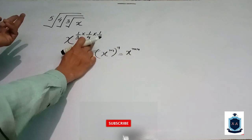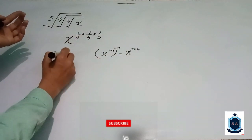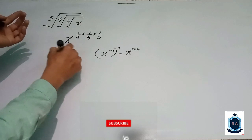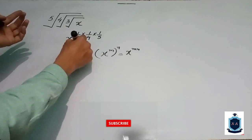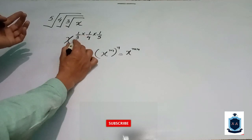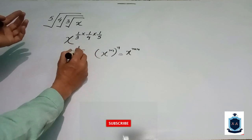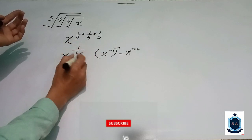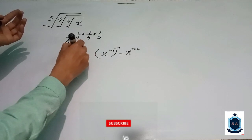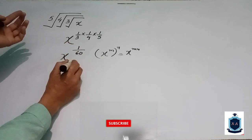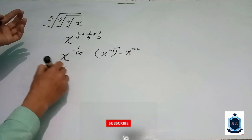Here you can see that the x power is 1 divided by 3 multiplied by 4 multiplied by 5, which equals 60. So the x power is 1 upon 60, which is equal to...